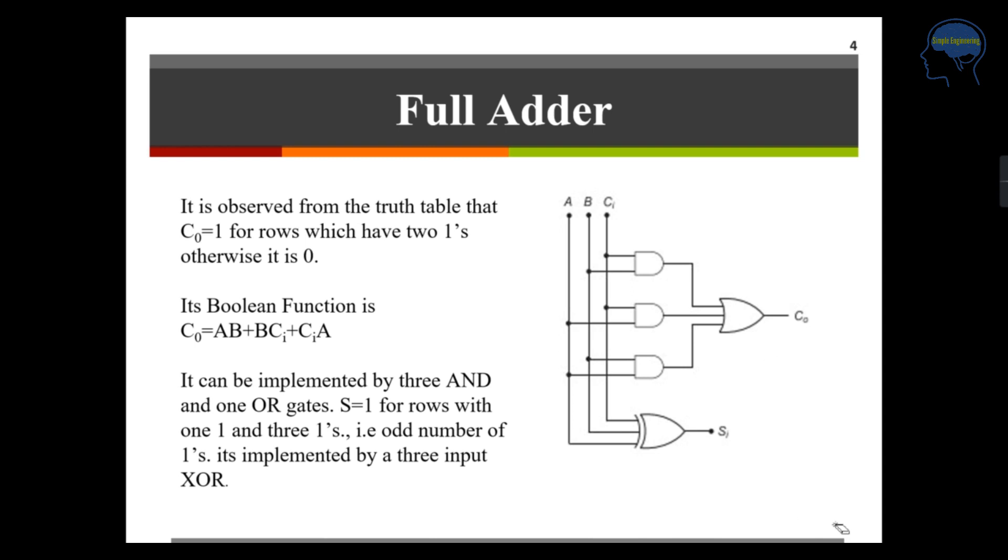It is observed that the truth table C naught is equal to 1 for the rows which have two 1s. Otherwise, it is 0 only. And your boolean expression for your carry will be AB plus BC in plus C in into A.